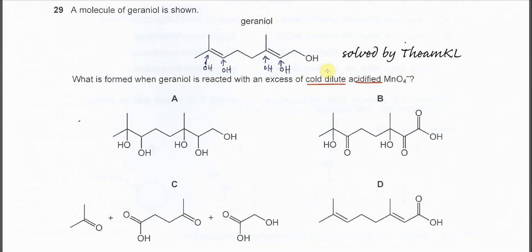Because it's cold and dilute acidified KMnO4, we know the C=C double bond will not totally break. It's just the pi bonds that will open up or break. The pi bonds will be gone, and at the same time, these two carbons will have 2OH added in.